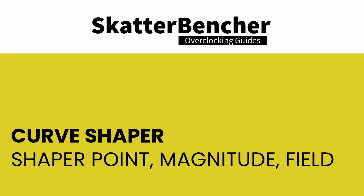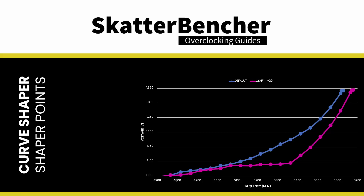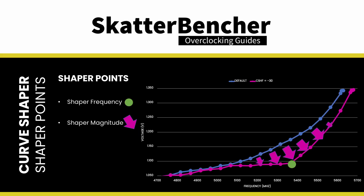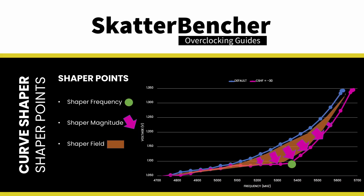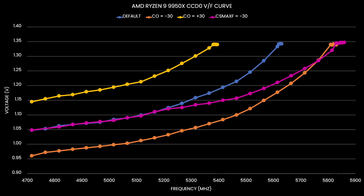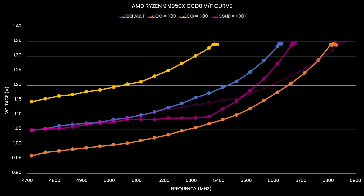So let's sum up our findings. Each of the regions appears to be defined by what we'll call shaper points. A shaper point is defined by a shaper frequency and a shaper magnitude. The voltage for frequencies around the shaper point behaves like it's in a gravitational field — for frequencies within the shaper field, the closer to the shaper point, the larger the impact of the shaper magnitude. The shaper points behave independently, so we can come up with some very unusual VF curves.